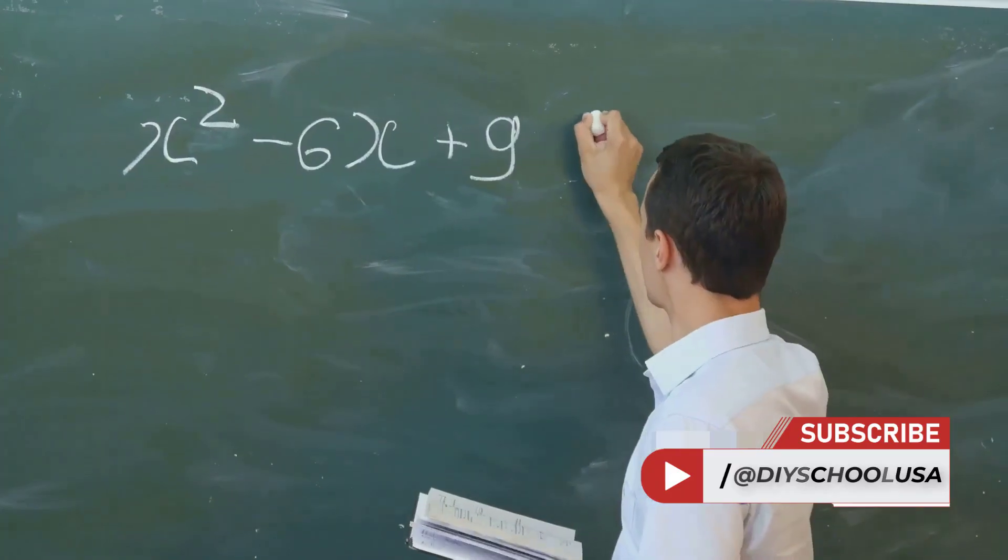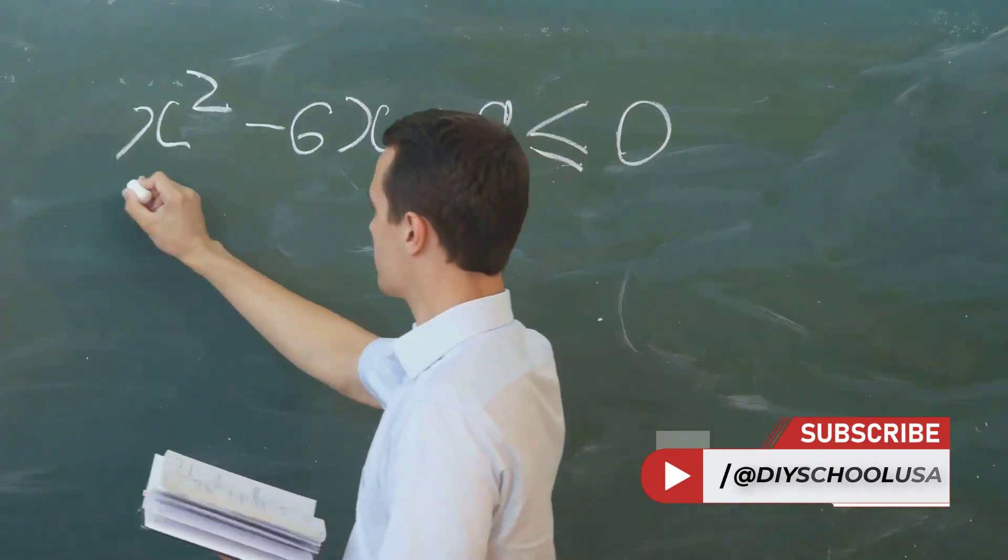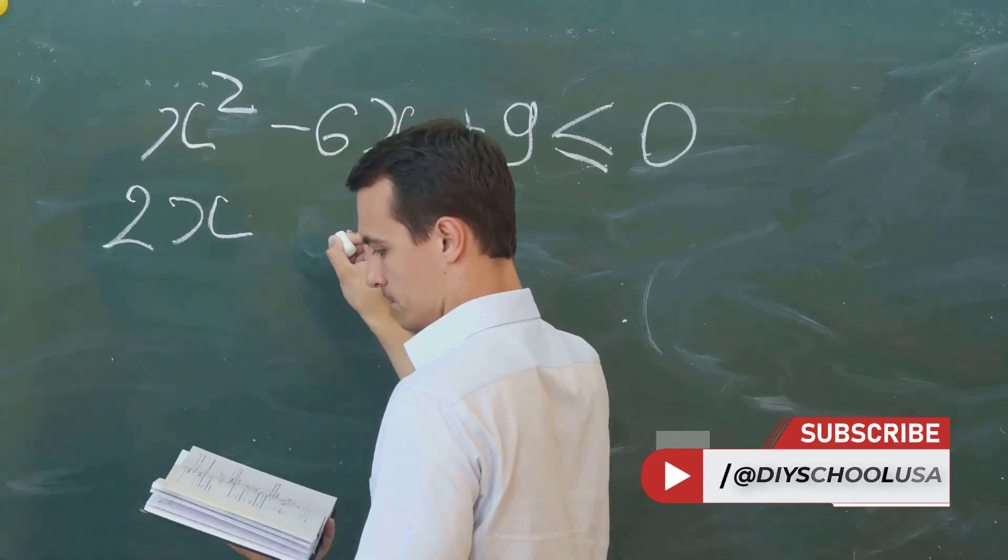Finally, the Babylonians' advanced understanding of geometry, evidenced by their knowledge of the Pythagorean theorem and their calculations of area and volume, paved the way for the geometric principles integral to calculus.